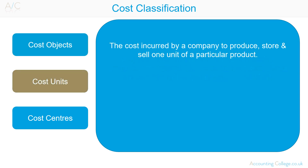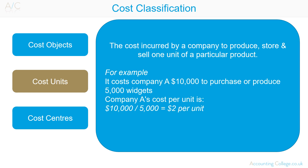A cost unit is a unit of product or service in relation to which costs are ascertained. It is the cost incurred by a company to produce, store and sell one unit of a particular product. Computed usually as the average cost, a cost unit includes all fixed and all variable costs incurred in a unit of product or service. For example, it costs Company A £10,000 to produce 5,000 widgets, so Company A's cost per unit is 10,000 divided by 5,000 — £2 per unit.